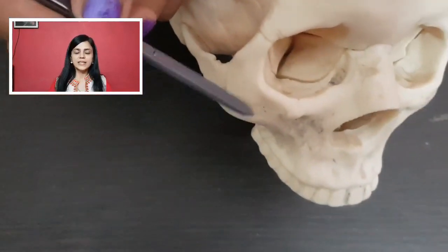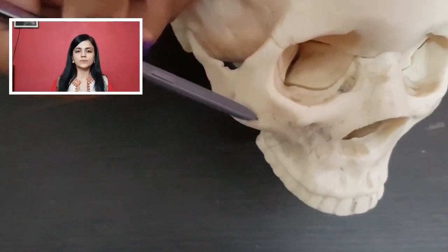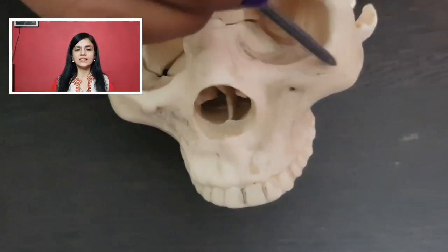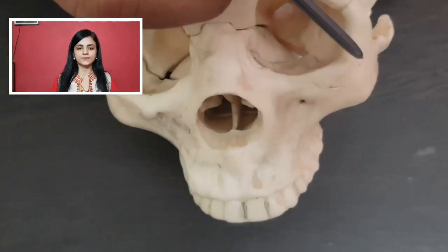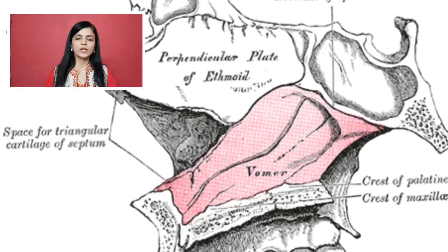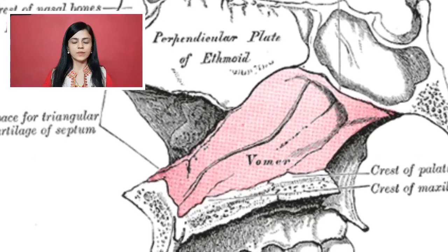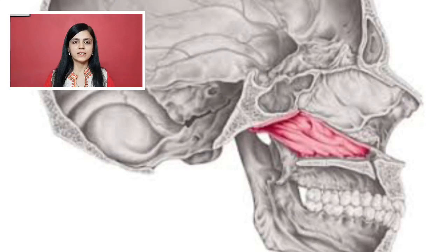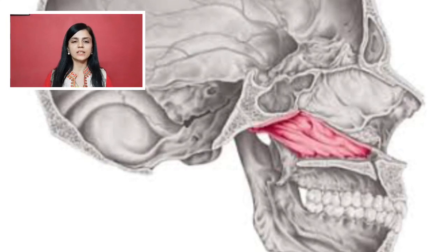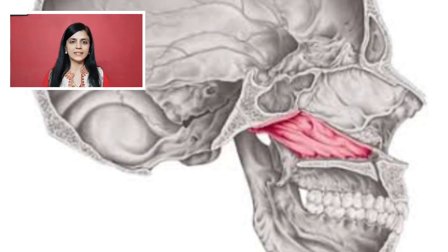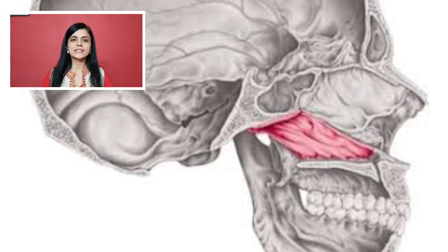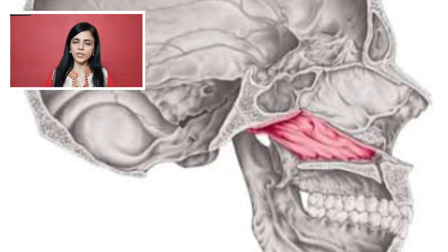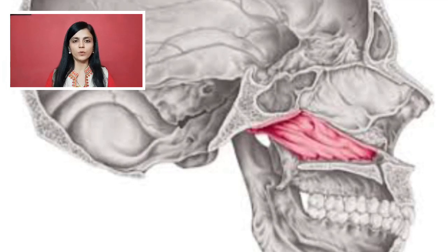The zygomatic bones form the cheekbones. Next is the vomer bone — this bone is inside the skull and is not visible from above. The vomer is a thin, flat bone; superiorly it joins with the perpendicular plate of the ethmoid bone.